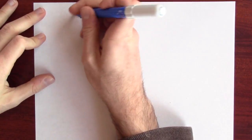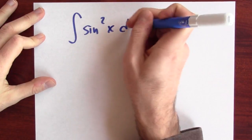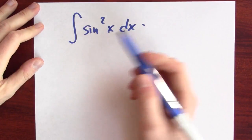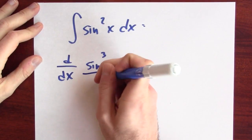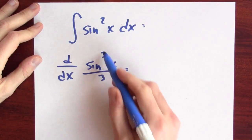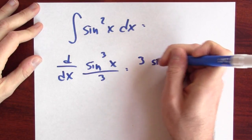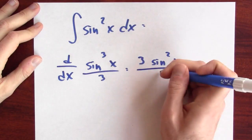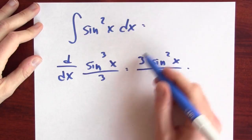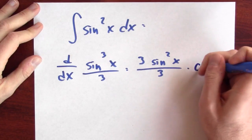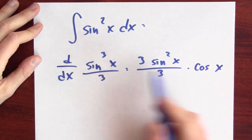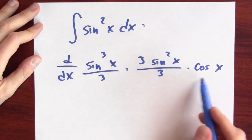What if I wanted to go backwards and anti-differentiate sine squared x? I'm looking for a function whose derivative is sine squared x. My first guess might be sine cubed over 3. If I differentiate this, I get 3 times the inside function squared divided by 3, giving sine squared x — but I also have to multiply by the derivative of the inside, which is cosine. So the derivative of sine cubed over 3 is sine squared x times an extra cosine, not sine squared x alone.